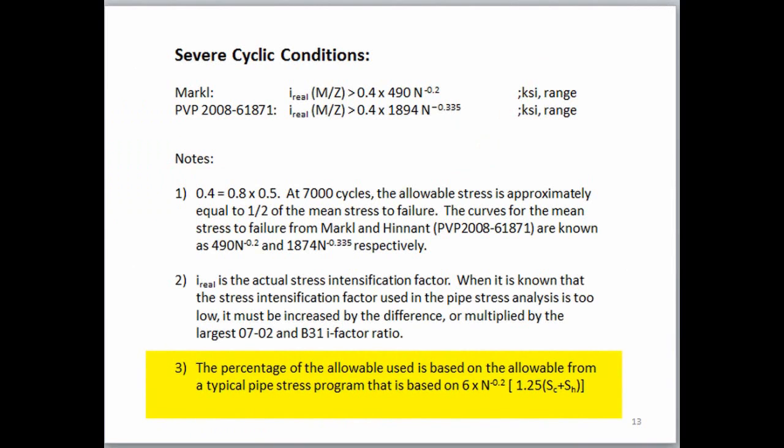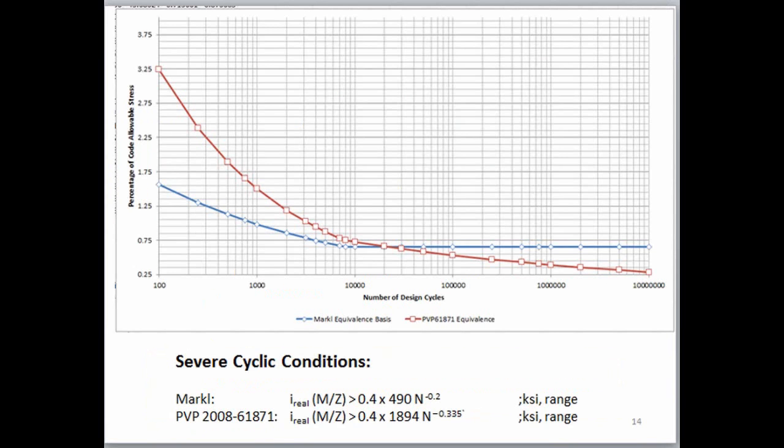This slide 13 gives the equations and notes for developing the previous curves if you'd like to use them. These are the same curves with the artificial low-end limits on the F cyclic reduction factor removed.